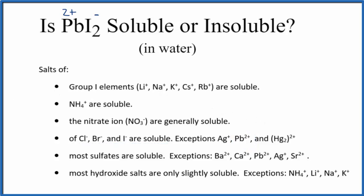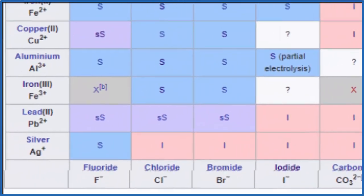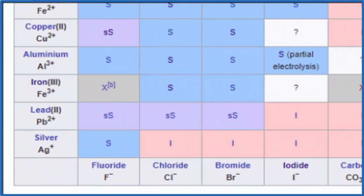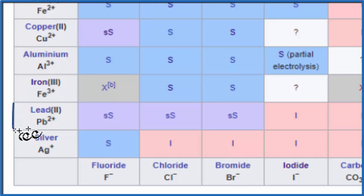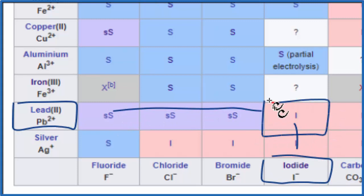We can also take a look at a solubility chart. Here's a portion of the solubility chart. We'll look down our list — these are the positive ions — and we find lead-2, Pb²⁺, and we're looking for iodide. Here, I⁻, there's the iodide ion. We go over and up, and that 'I' tells us that lead-2-iodide is insoluble in water.